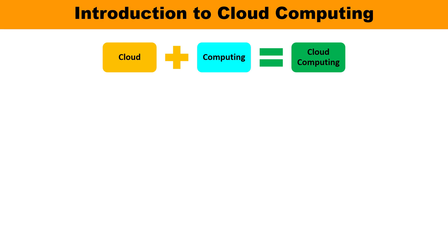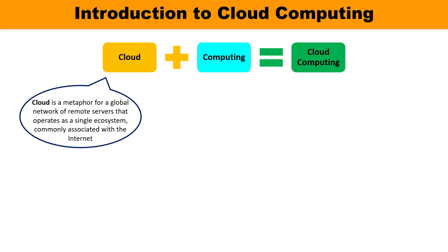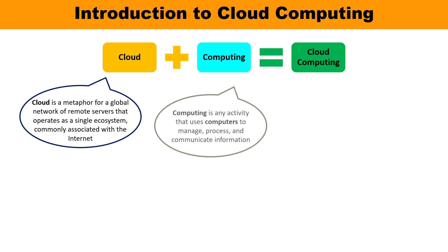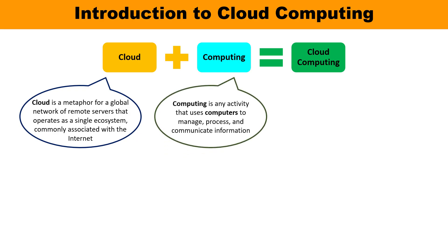The second term is computing. From the term computing, it must be clear — it means you have to compute something. It is the activity related to computers: how computers manage, process, and communicate information. That activity is what we call computing. Now that you understand cloud and computing separately, you will be able to define the term cloud computing.